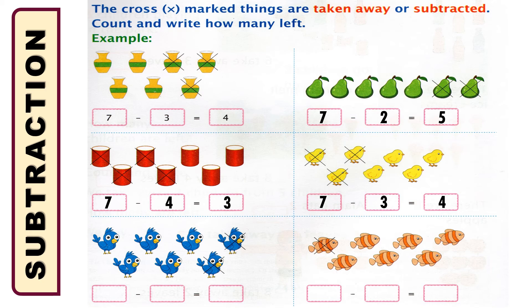Below, if you look, there are seven blue birds and among them two were cross-marked. So how many remain unmarked? Counting: one, two, three, four, five — five birds were unmarked. So how will we write this math? Seven subtraction two is equal to five.